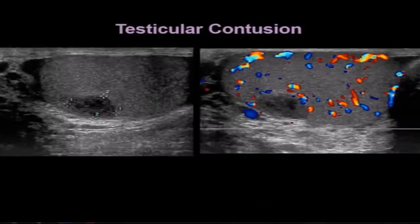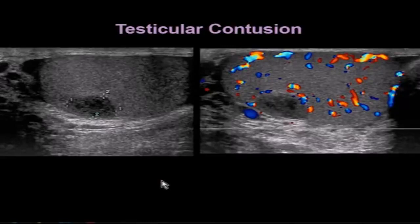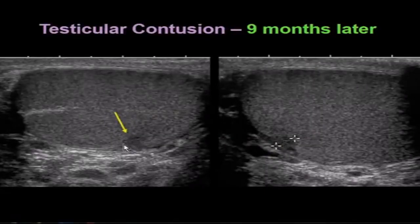This patient has a testicular contusion. Contusions can look like intratesticular masses and raise concern for malignancy — here we have a well-defined hypoechoic heterogeneous lesion. Remember that 10% of testicular cancers present with a history of trauma, so we need to raise concern that a focal lesion could be a tumor. If the treating physician wants to wait, close follow-up is recommended, as contusions get smaller rapidly. This patient was followed monthly for nine months, and by nine months the contusion is almost invisible on ultrasound, having resolved.